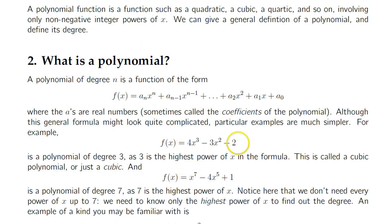So here we have a polynomial. I have 4 multiplied by x to the power of 3 minus 3x to the power of 2 plus 2. The numbers in front of the x here are called coefficients. So in this case the coefficient is 4 and here is negative 3 and at the end it's 2.